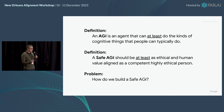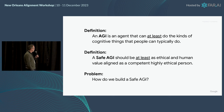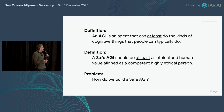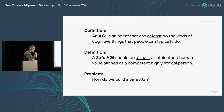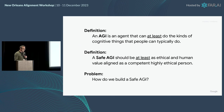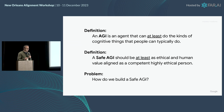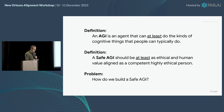A few definitions. By AGI, I mean an agent that can at least do the kinds of cognitive things that people can typically do. A safe AGI — that's a bit more controversial — should be at least as ethical and human value-aligned as a competent, highly ethical person. I know we should aim for more than this, but a competent, highly ethical person isn't going to try to turn the world into paperclips or anything too crazy. So that would be quite good if we achieve this.